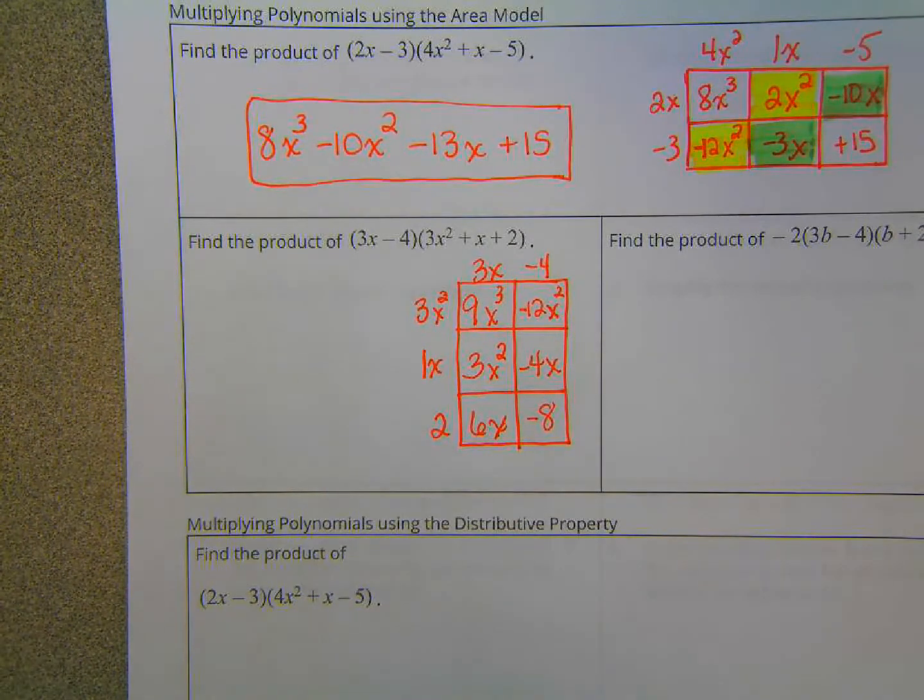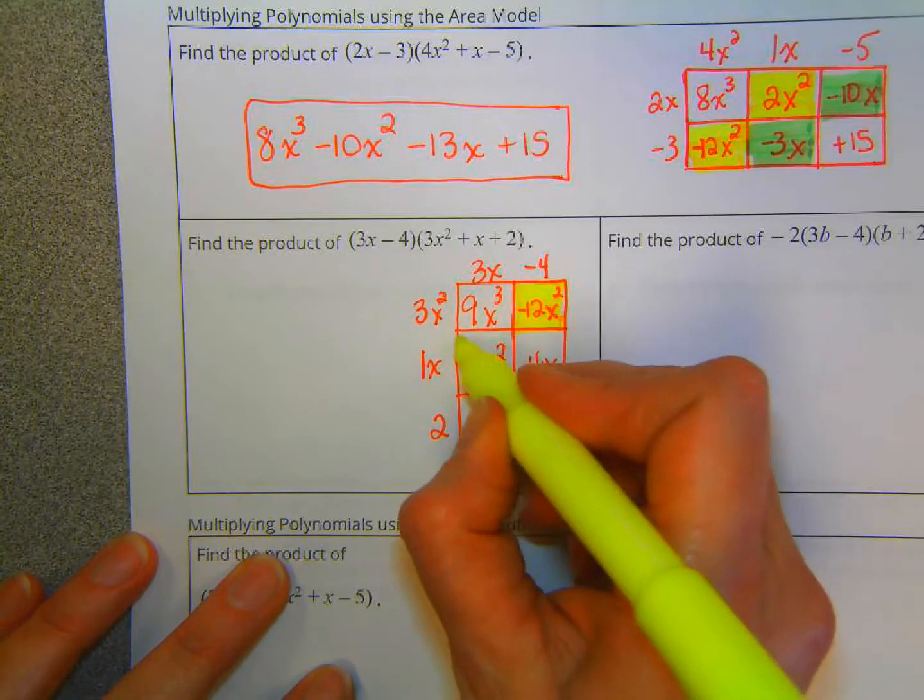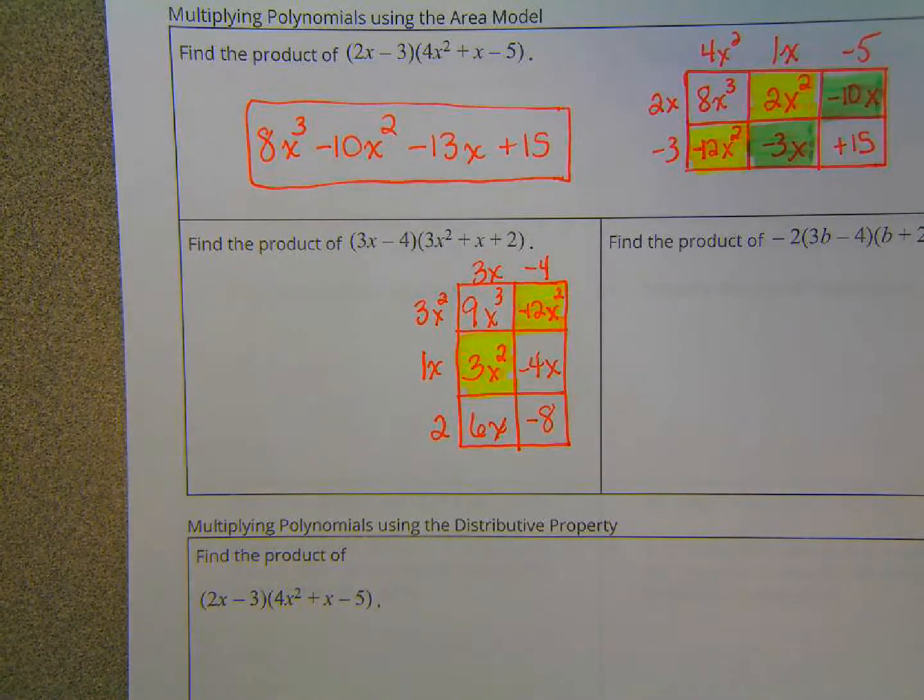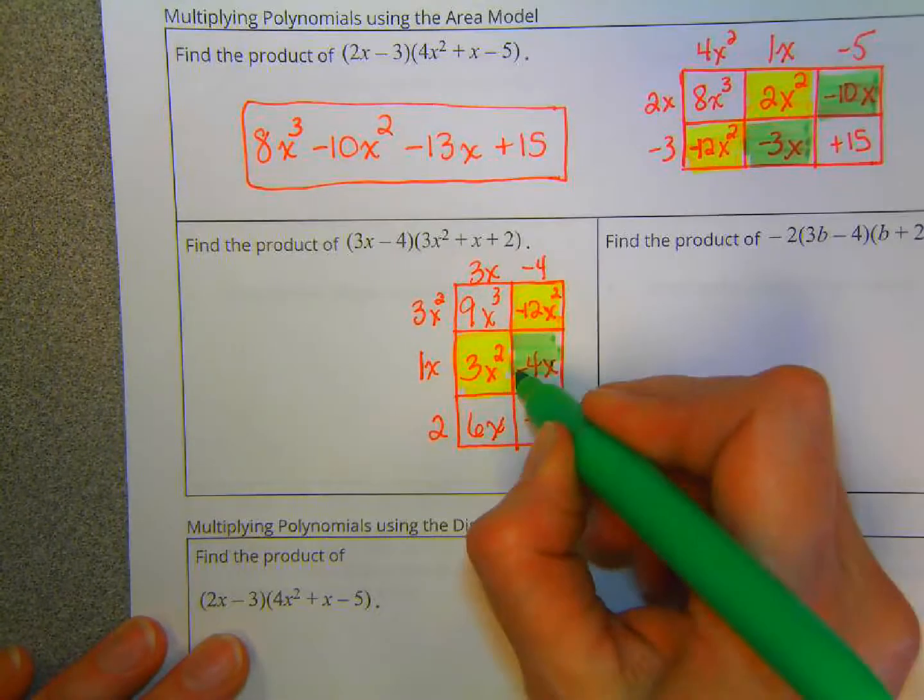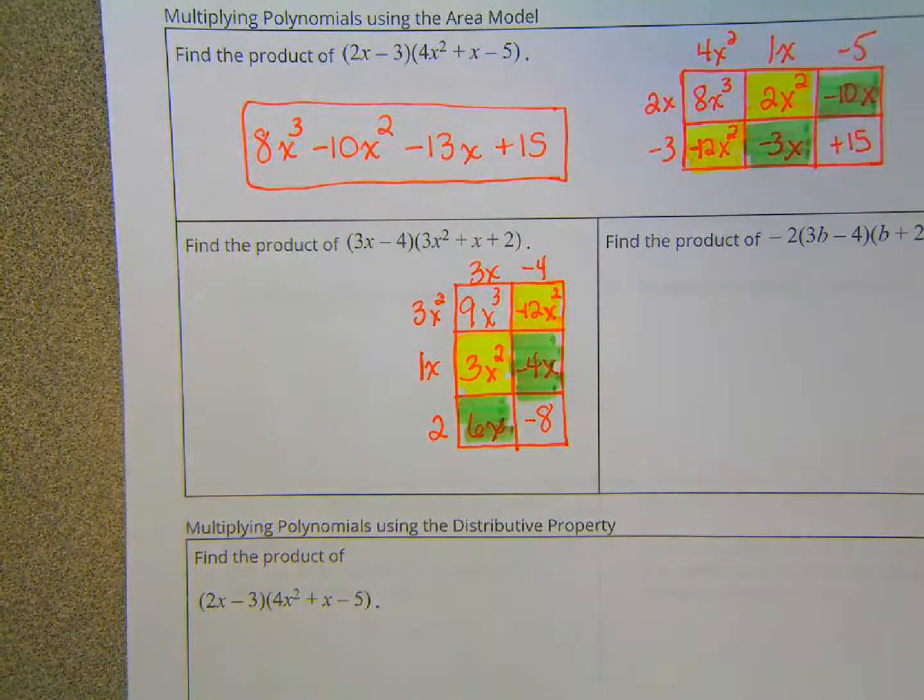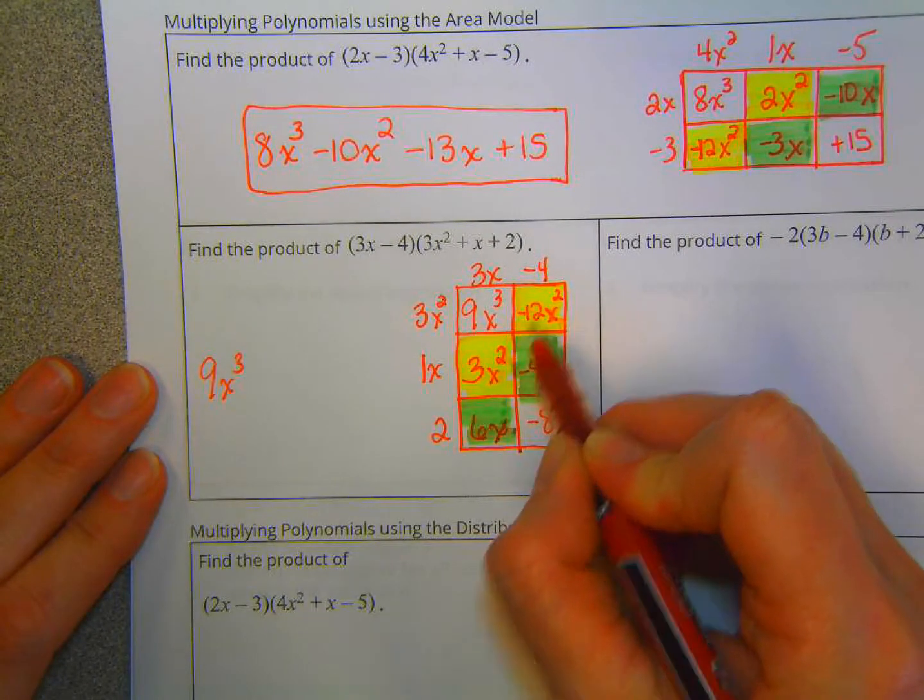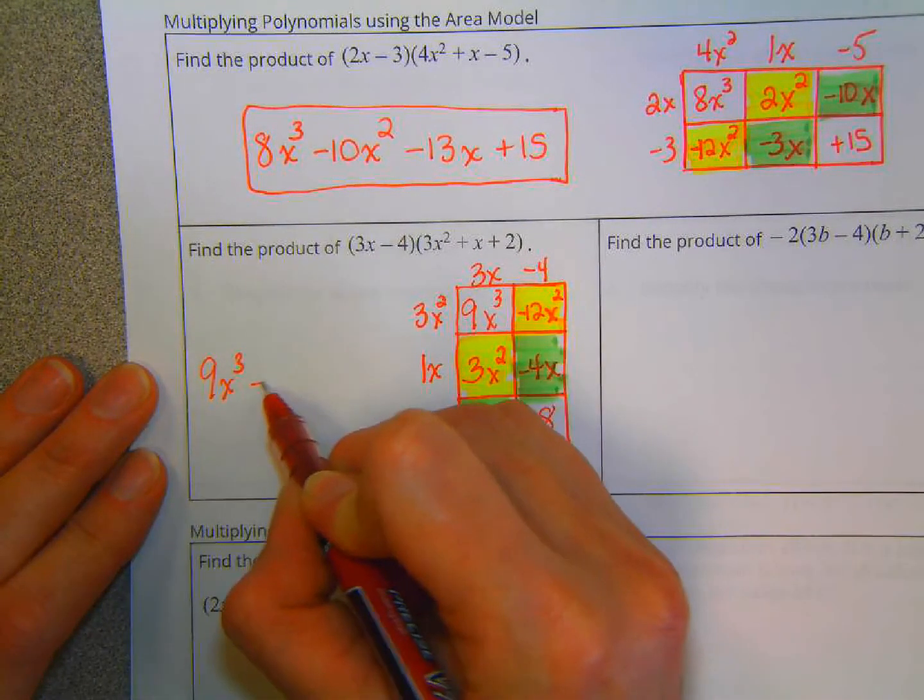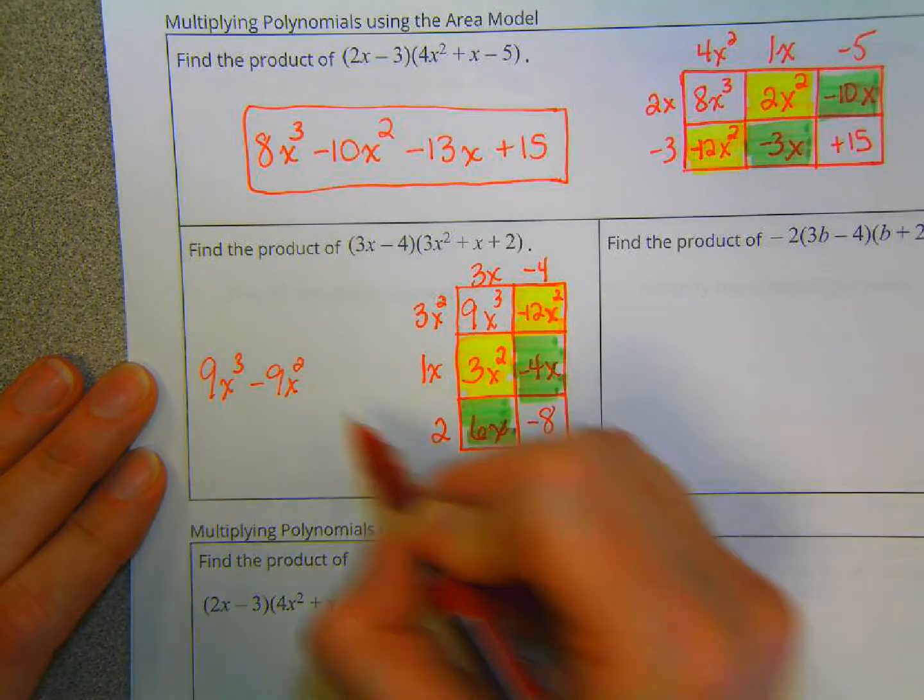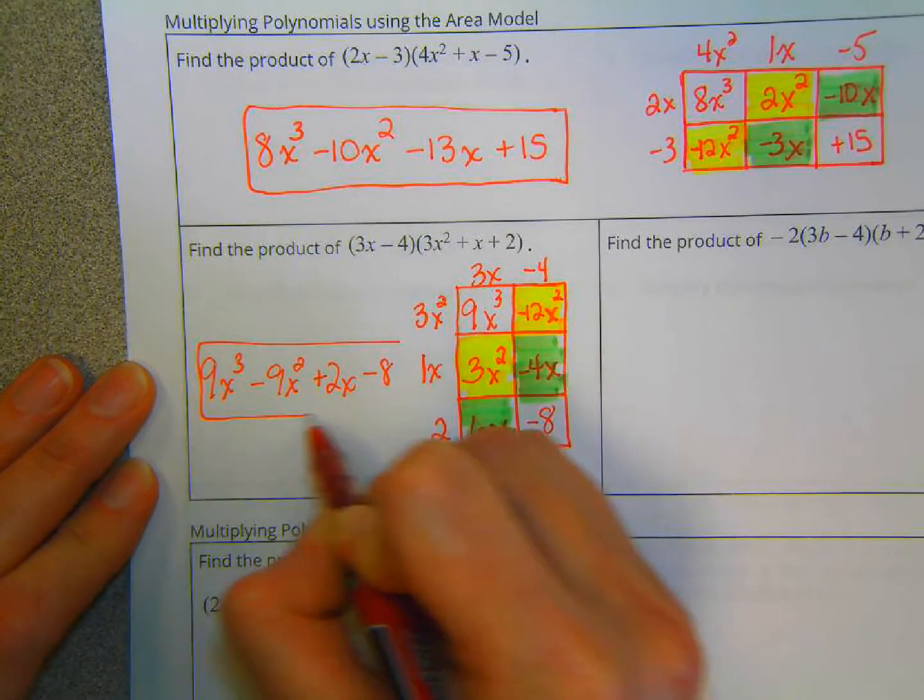And again, looking at these like terms. We've got a quadratic term, and there's a quadratic term. And then this is a linear term, and this is a linear term. So then we combine our like terms. And we've got 9x cubed. Negative 12 plus 3 is negative 9x squared. Negative 4 plus 6x is positive 2x. And then negative 8. So this is our final answer.